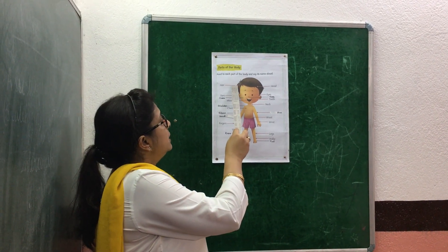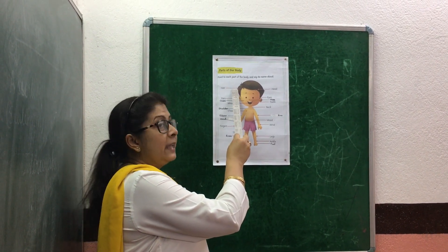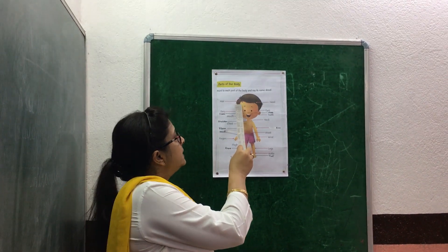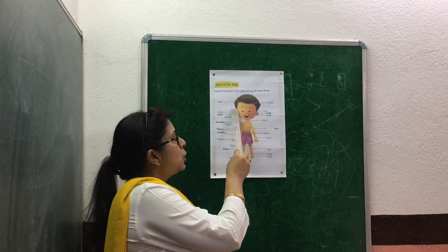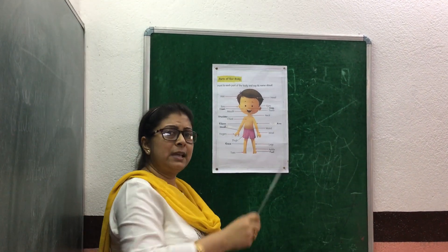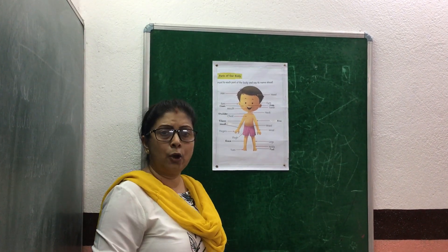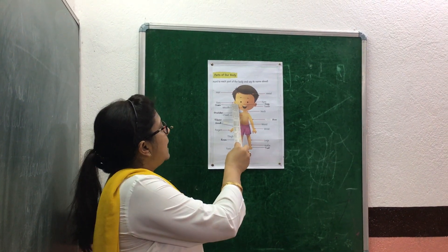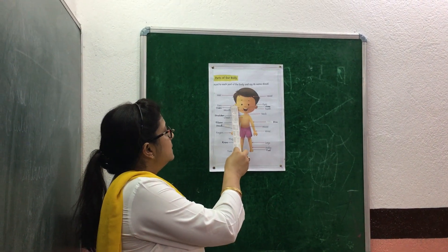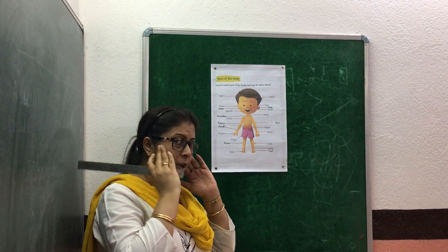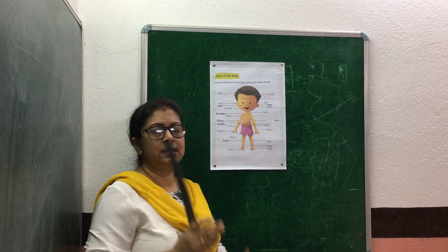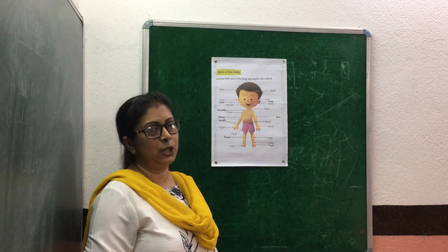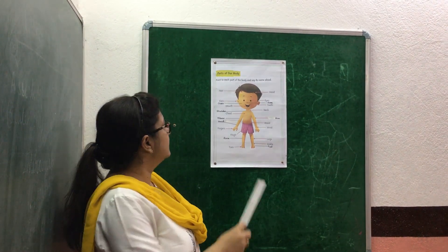Now here is our hair. The boy is having short hair. Some may be having long hair like me. These are ears. We have two ears. And we hear with our ears.